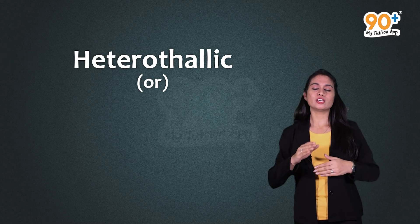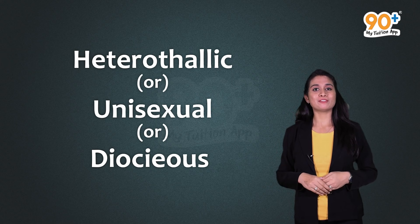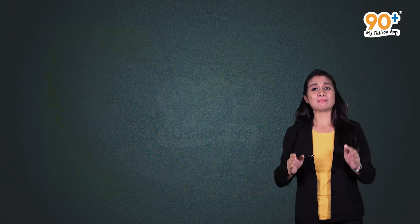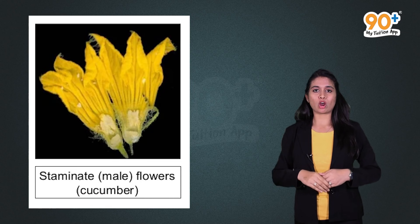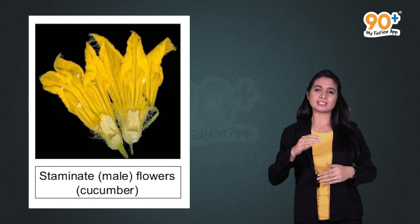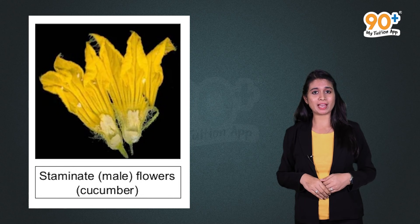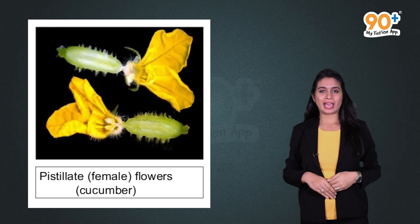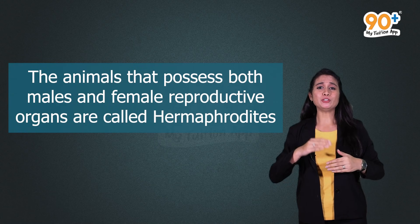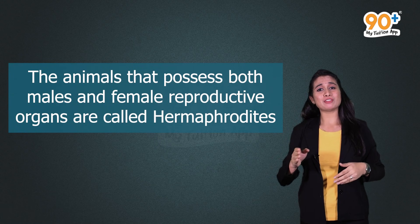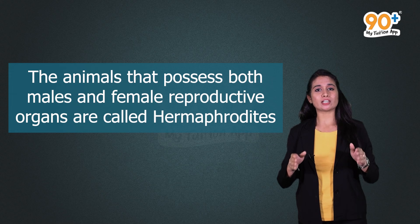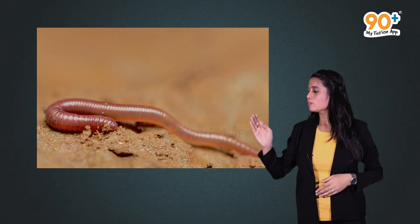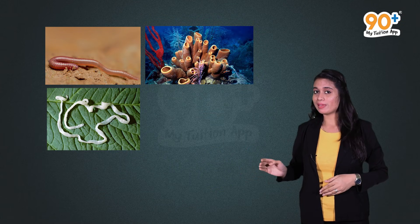Plants that have female and male reproductive structures in different individuals are called heterothalic, unisexual, or dioecious — for example, date palm and papaya. The male reproductive part is called staminate, which bears stamens, and the female reproductive part is called pistillate, which bears pistils. In animals, those that possess both male and female reproductive organs are called hermaphrodites — for example, earthworm, sponge, tapeworm, and leech.